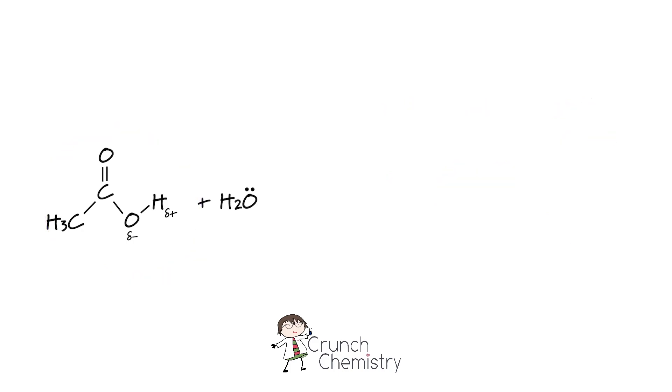Well the answer comes down to the stability of the anion as I alluded to earlier. Let's have a look at this reaction between ethanoic acid and water. We could imagine that the oxygen in the water uses its lone pair of electrons to steal the hydrogen out of the OH group and the electrons from the OH bond end up on the oxygen. The result is our carboxylate ion.